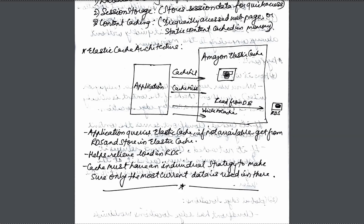In this diagram you can see there is RDS, ElastiCache, and your application. Whenever a specific data is required and the user is requesting for data, it will first go to ElastiCache and check whether data is present or not. If not, it will go to RDS and provide the data, but at the same time it will store the cache. So the next time the application makes a request, it will directly take it from ElastiCache.